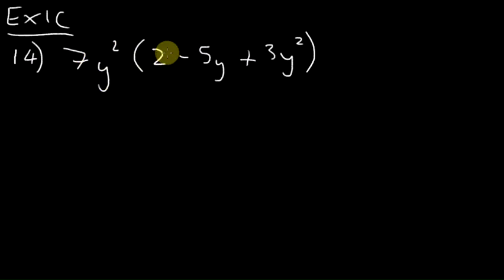Okay, so 7y squared times 2 is 14y squared. 7y squared times minus 5y will be minus 35y cubed.